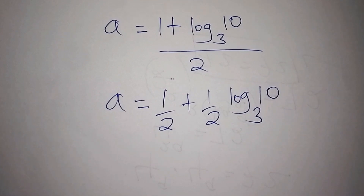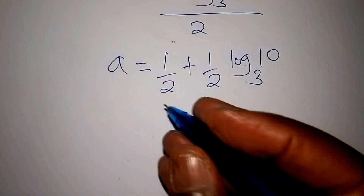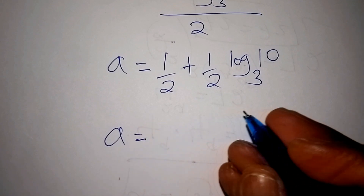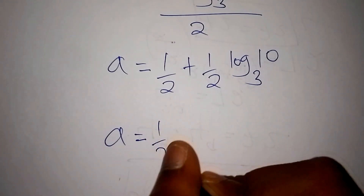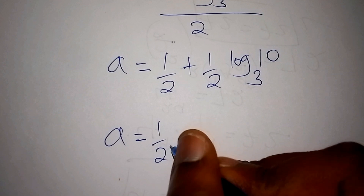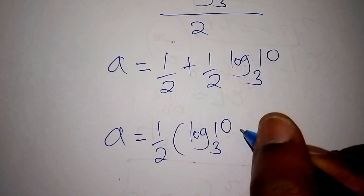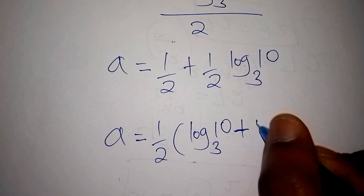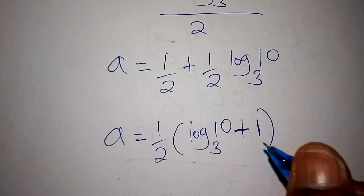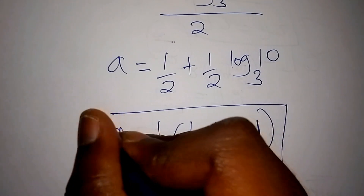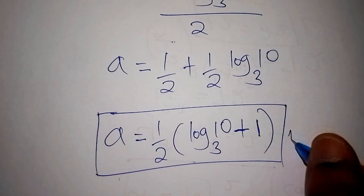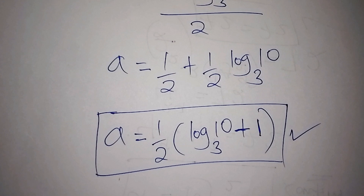Finally, A equals one-half times log of 10 to the base 3, plus 1. These are our correct answers for this math problem. If you feel we worked this out in the best way possible, please give us a like and subscribe to our channel.